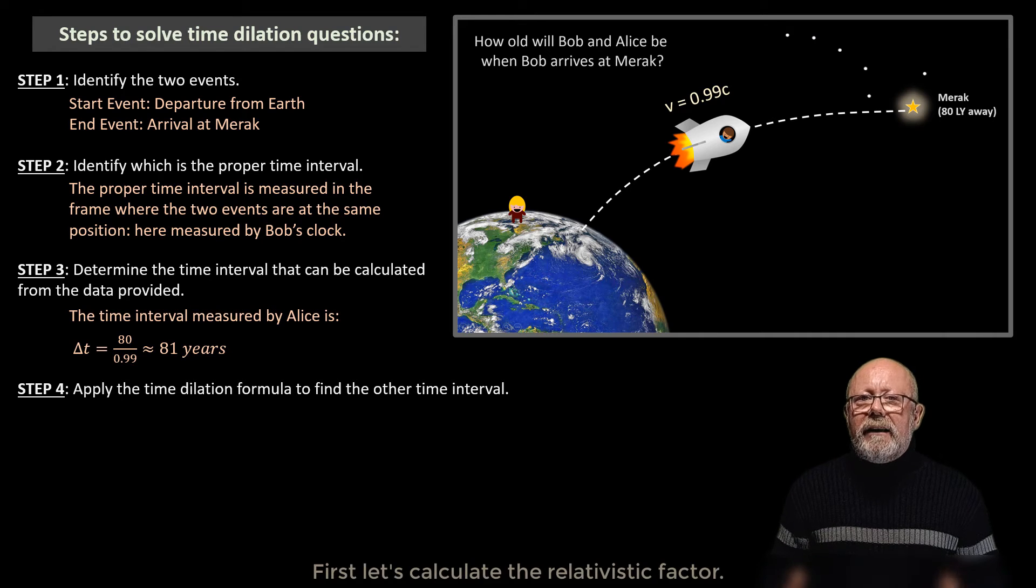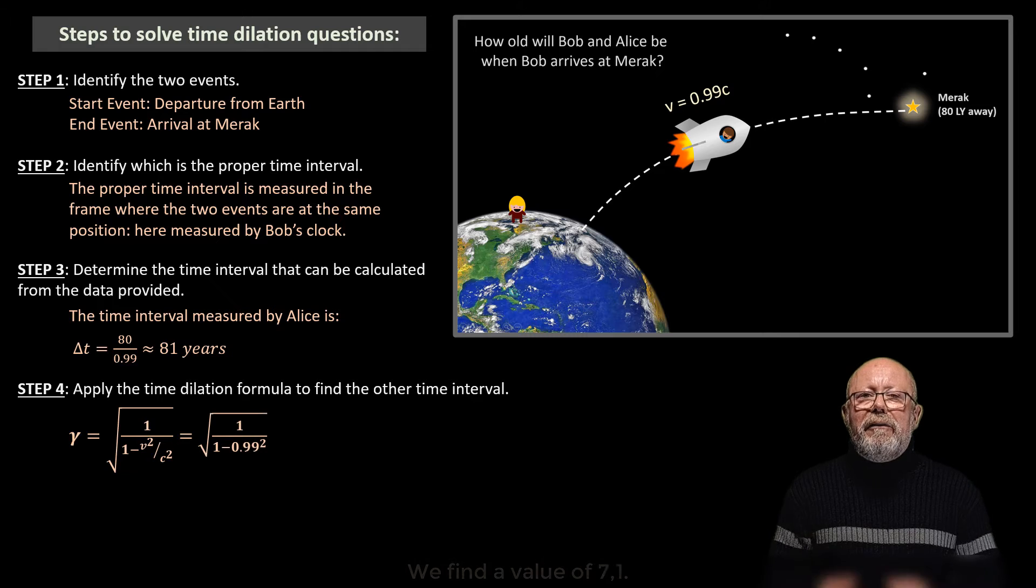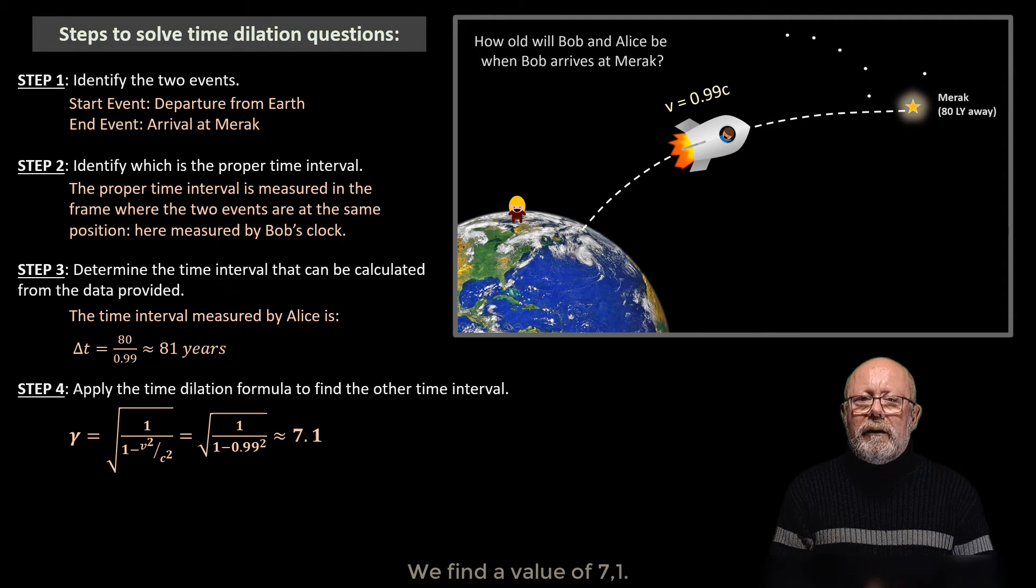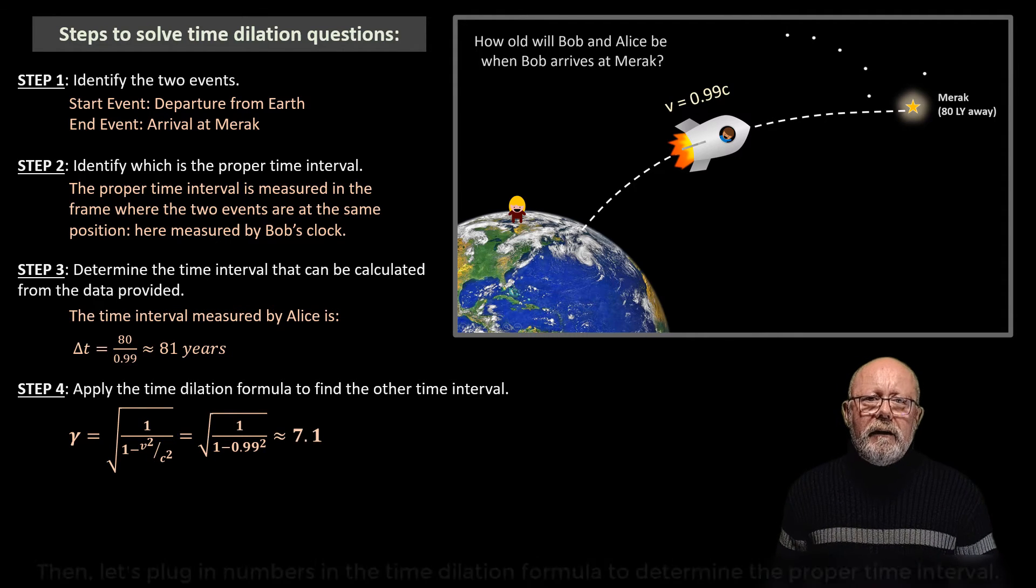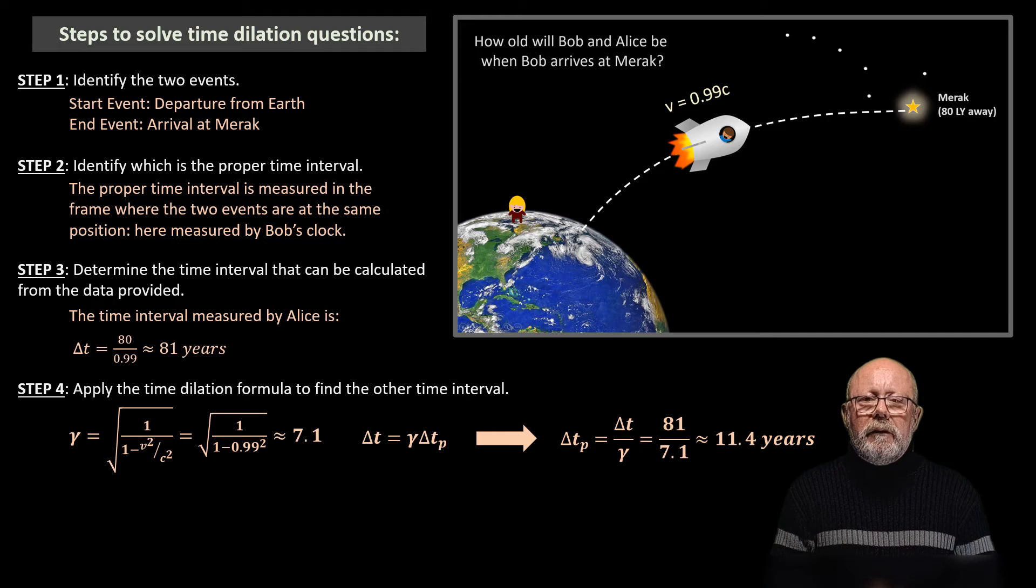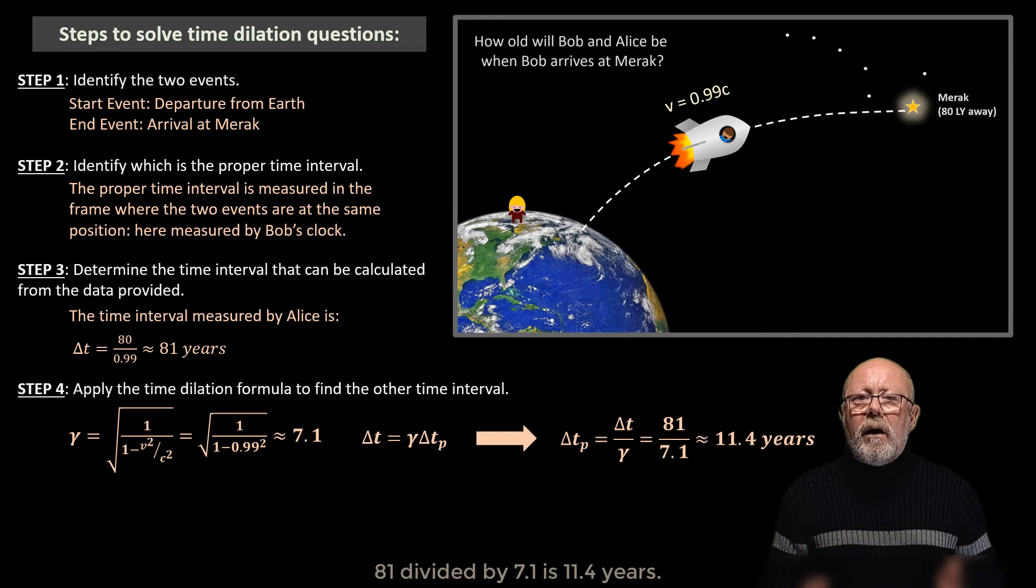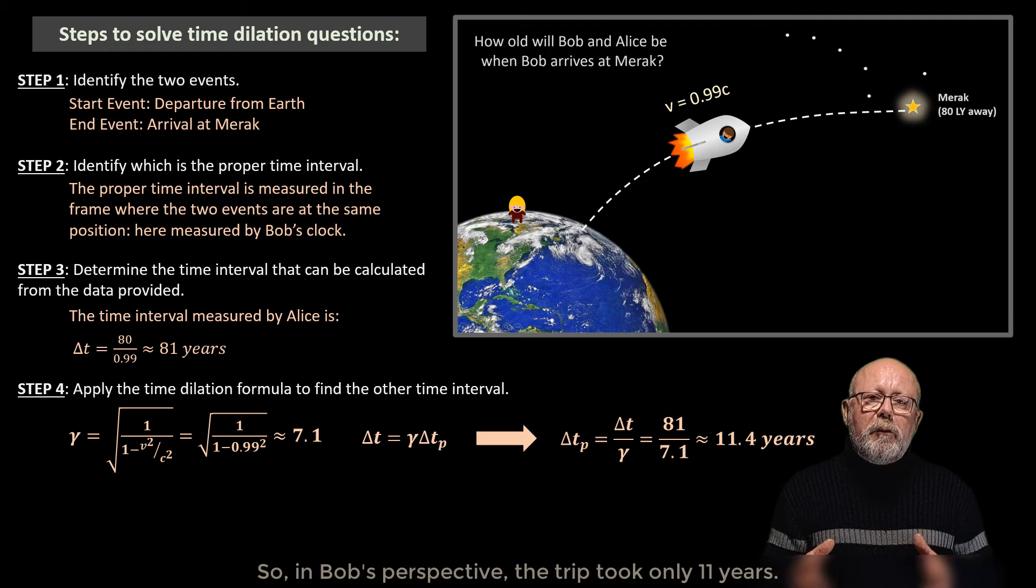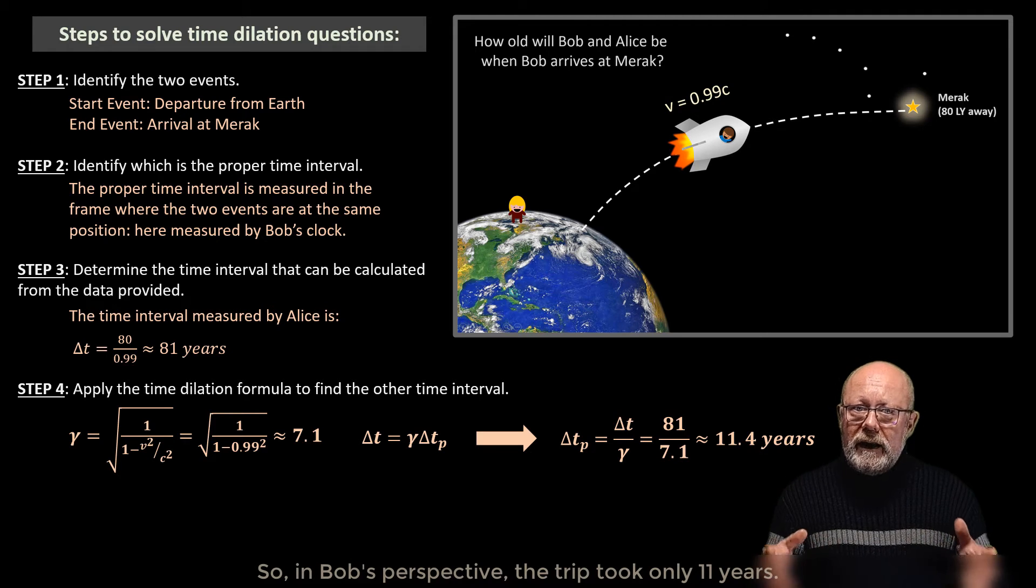First, let's calculate the relativistic factor. We find a value of 7.1. Then, let's plug in numbers in the time dilation formula to determine the proper time interval. 81 divided by 7.1 is 11.4 years. So, in Bob's perspective, the trip took only 11 years.